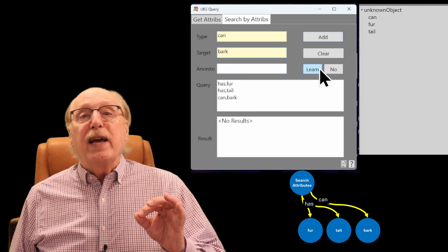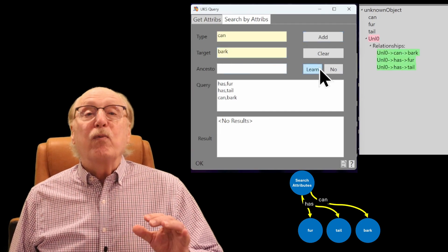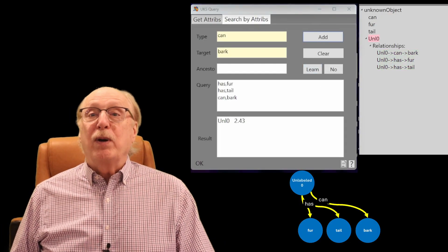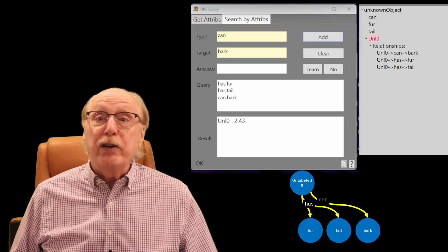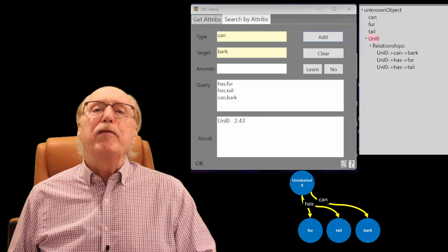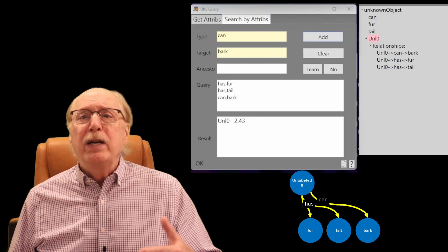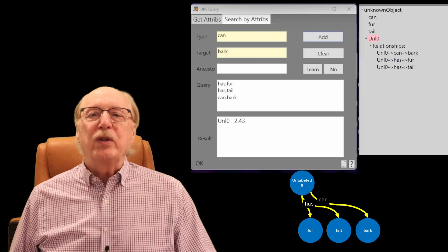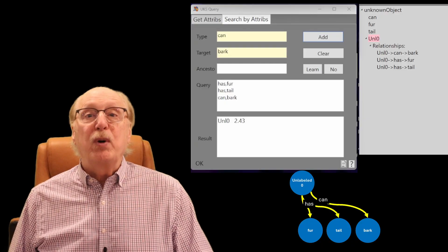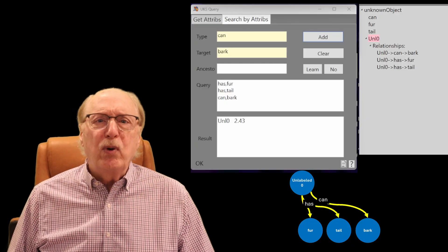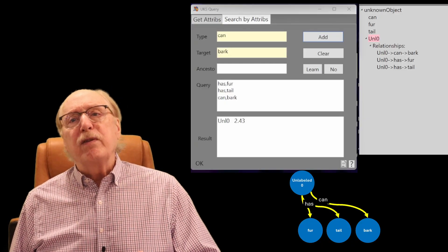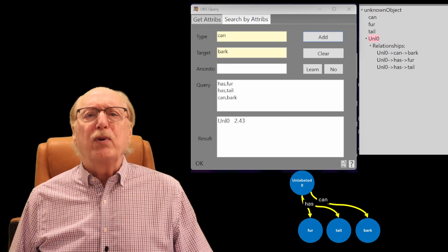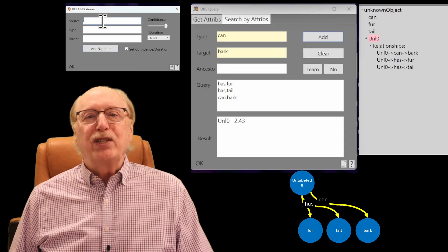The system searches its graph for a match and finds nothing, because the graph is empty. To learn, it allocates a new node relating these sensory attributes. This new node is unlabeled. It represents a collection of observed characteristics, but there is no concept yet of dog or Fido, just a cluster of connected sensory impressions. Notice that the same inputs are used for both searching and learning.